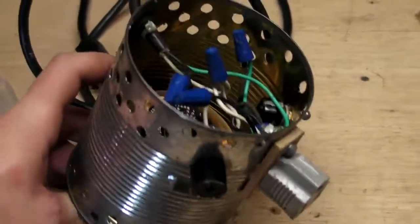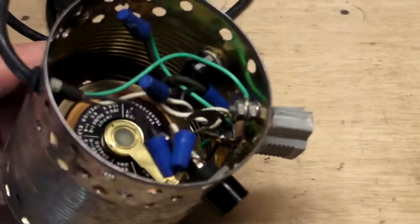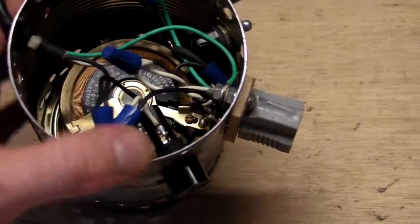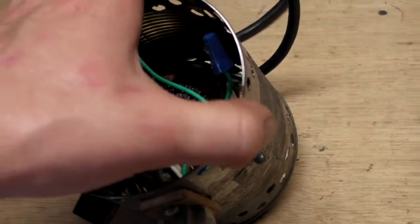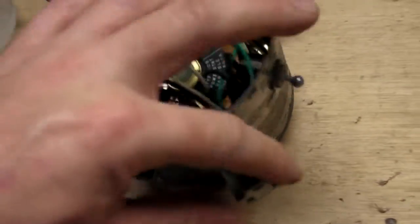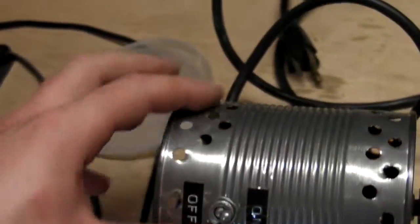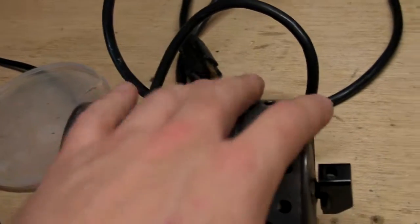There's a variac, a 2.25 amp variac inside there, and of course we got fuse, power switch, and the power output right there. It's a very nice compact construction. I got holes drilled on the bottom and the top for ventilation.